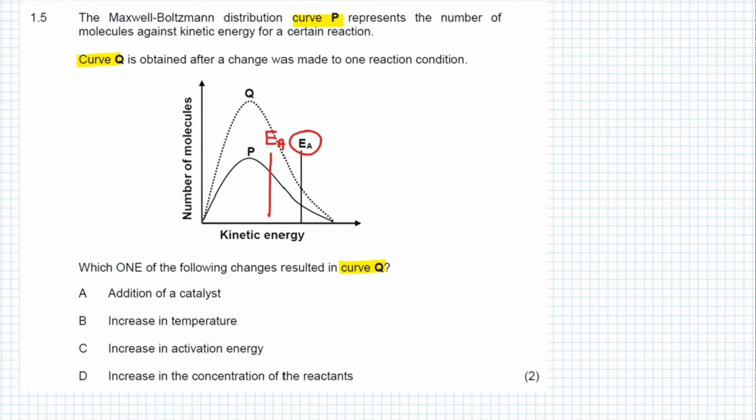Is it B, an increase in temperature? If you look at graph P and graph Q, you will notice that the peaks of the graph are aligned. That means that the average kinetic energy of the particles in both situations is exactly the same. An increase in temperature will increase the average kinetic energy, so since the kinetic energy stays the same, B is incorrect.